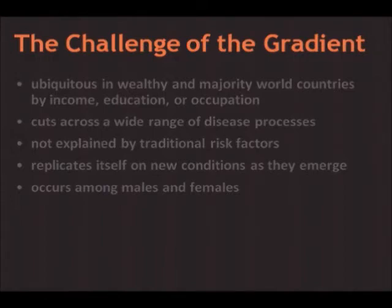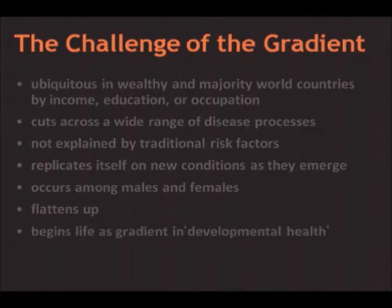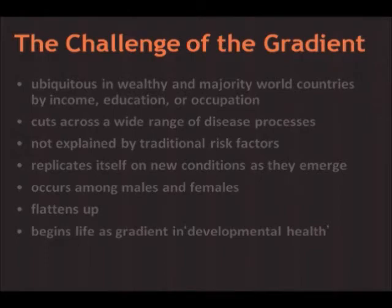If you do disability-adjusted life years, the steepness of gradients for males and females tends to come out about the same. The key point is that when you deal with all of that, which does not fit the biology and pathology taught in medical school, you have to start asking where the origins of resilience and vulnerability come from — something that can cut so broadly across conditions and replicate itself in new conditions as they come into society.